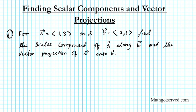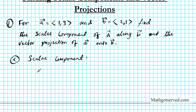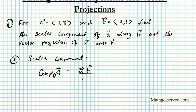We're going to do this as a two-part process. We're going to first focus on finding the scalar component of a along b. So part a is the scalar component. We'll start by writing the formula: the component of a along b is given by a dotted with b, divided by the magnitude of vector b.